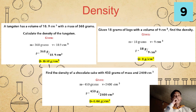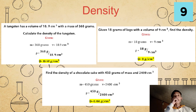For our third example: find the density of a chocolate cake with a mass of 450 grams and a volume of 2,400 cubic centimeters. Given: mass equals 450 grams, volume equals 2,400 cubic centimeters. Using density equals mass over volume, we substitute: density equals 450 grams over 2,400 cubic centimeters. It will become density equals 0.1875 grams per cubic centimeter.